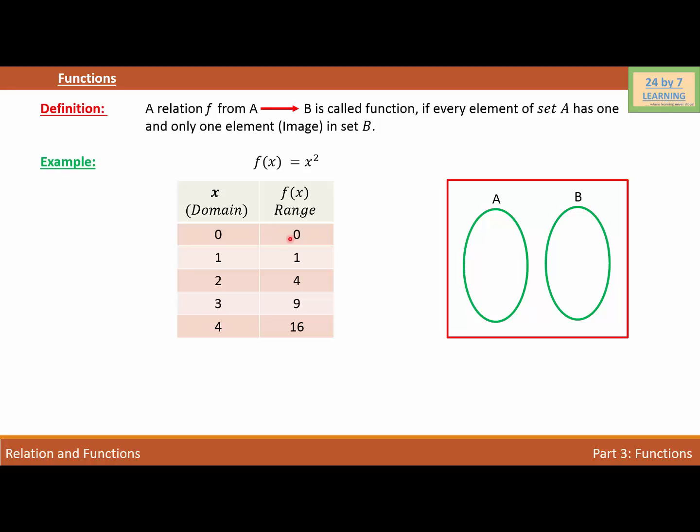For x equals 0, f(x) is 0. I'm going to connect these two values using an arrow. In the same way, for 1, I have 1. I'm connecting 2 with 4, 3 with 9, and 4 with 16. I'm connecting the elements of set A with the elements of set B, and the relation that connects the elements of set A and B is f.